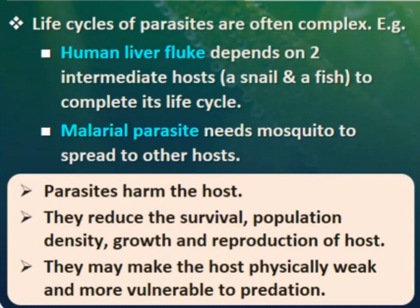Life cycles of parasites are often complex. For example, the human liver fluke depends on two intermediate hosts — a snail and a fish — to complete its life cycle. Similarly, the malarial parasite needs both a mosquito and a human being. Parasites harm the host by reducing survival, population density, growth, and reproduction. They may also make the host physically weak and more vulnerable to predation.